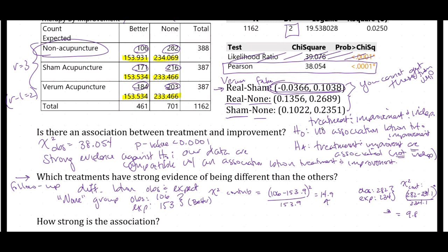Thinking about all three intervals together, we see improvement between any acupuncture treatment — real and sham — versus non-acupuncture, but no strong evidence of a difference between real versus fake acupuncture. If there's no real difference between real and fake acupuncture, then maybe the differences we see between any acupuncture and none at all is really just the placebo effect — people only thinking they're getting better because of the intervention.